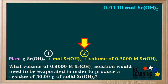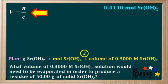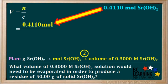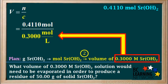In step 2, we calculate the volume of 0.3 molar Sr(OH)₂ solution that contains 0.4110 moles of dissolved Sr(OH)₂. We know the number of moles and the concentration, so we can calculate the volume using the equation V equals N over C. We substitute 0.4110 moles for N and 0.3 molar for C. Instead of using capital M for molarity, we express it as moles per liter. This makes it easier to cancel units.